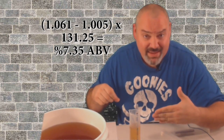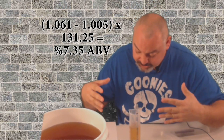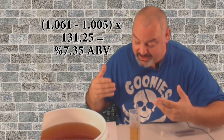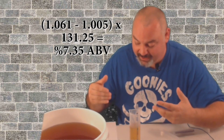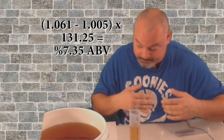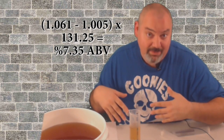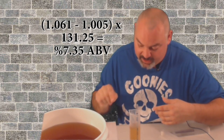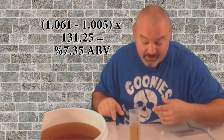Our ABV formula is: you take your starting gravity, subtract your final gravity — so 1.061 minus 1.005 — then take that number and multiply it by 131.25. You could do that math yourself, or you can do what I did and plug it into a calculator online. That's the formula: starting gravity minus final gravity, times 131.25. By that calculation, my pub cider will be 7.35% alcohol.